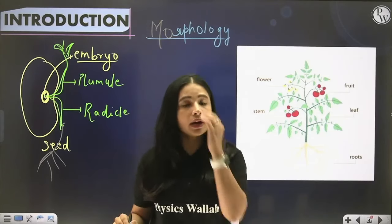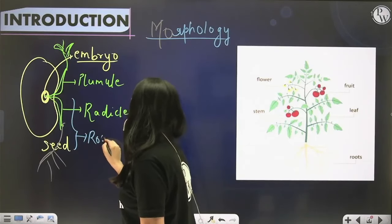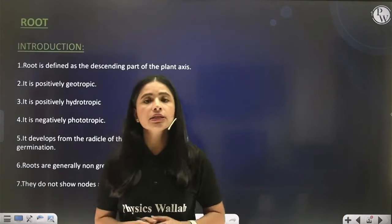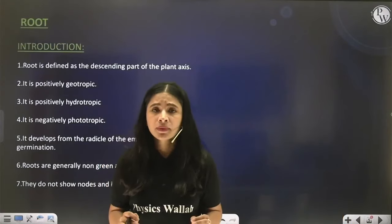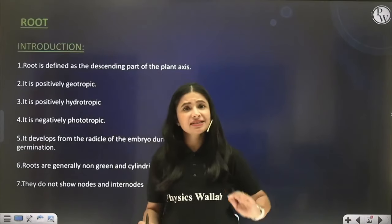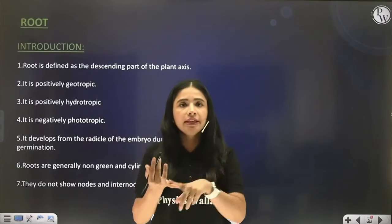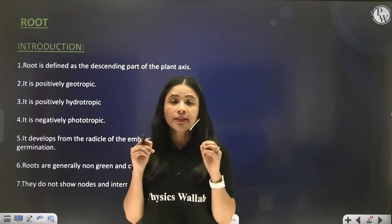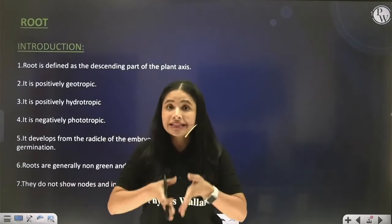The first part we are going to consider is the root system. What are roots? This is not a new term — since science started in our lives we have been hearing root, stem, leaf, flower, fruit. We all know that roots represent the brown part of the plant body growing inside the soil.